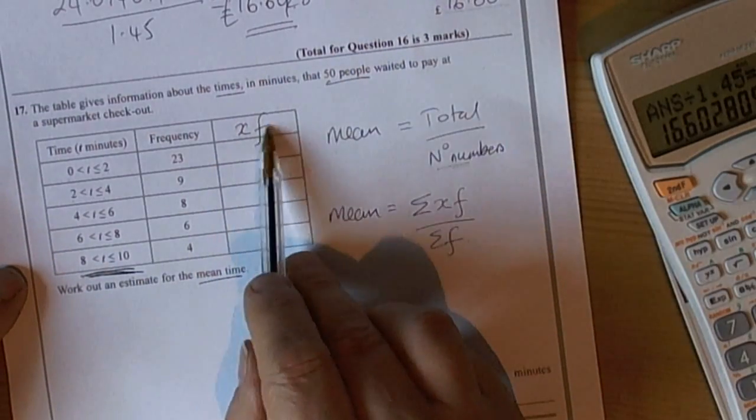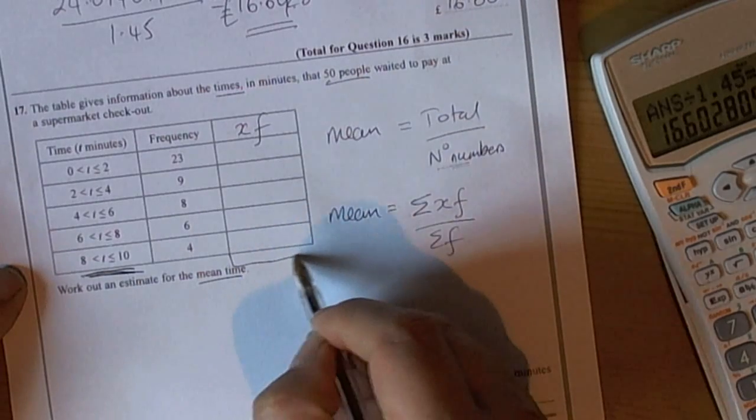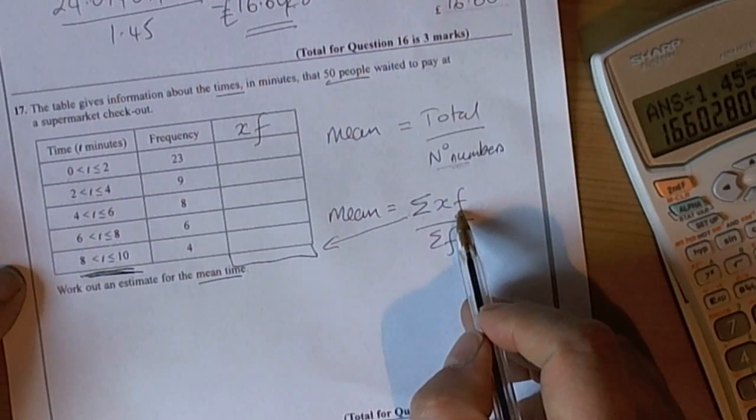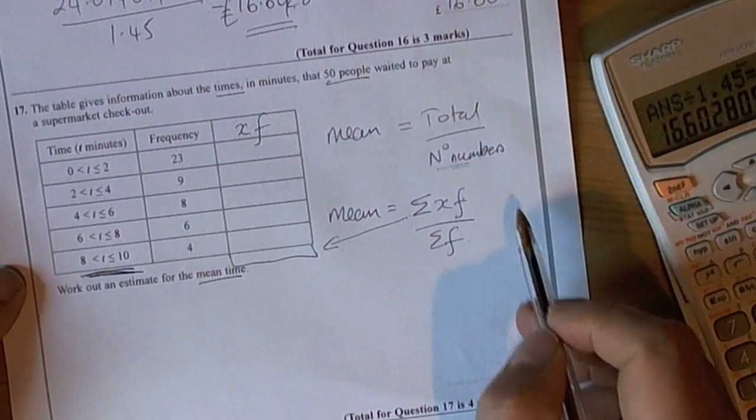So we're going to calculate the xf's here, and when we do this total, that's going to be the sum of the xf's. That's the total required for the mean average.